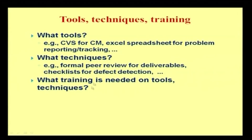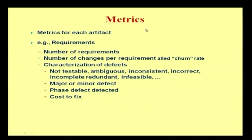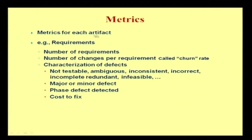There might be problems arising from the use of different tools, techniques, or training provided as part of development. What tools are used, what techniques are provided, and what training is needed on tools and techniques for the end user community are also given the highest importance. As part of quality assurance, metrics are also considered — random metrics proposed in terms of correctness and efficiency. Metrics are defined for each artifact; for requirements, this includes the number of requirements posted, number of changes per requirement (called churn rate), and characterization of defects.